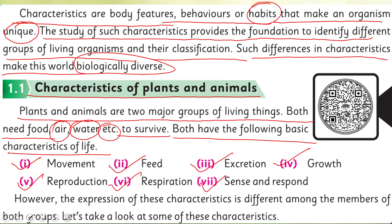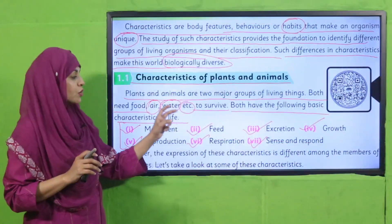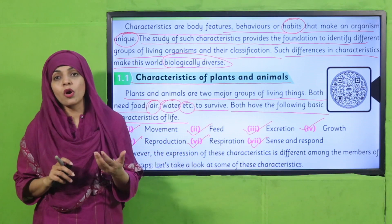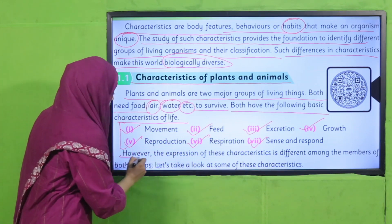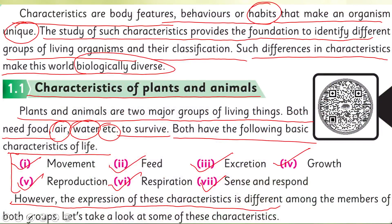Both plants and animals have all these characteristics, but they perform them in different ways — their habits are slightly different. Both have movement, both need energy, both excrete, both grow, both reproduce, both respire, and both sense and respond to their surroundings. However, the way they express these characteristics is different among the members of both groups. Let's take a look at some of these characteristics.